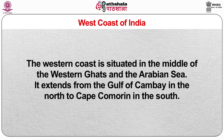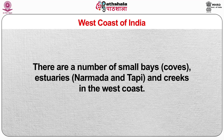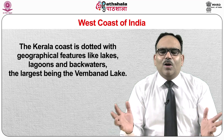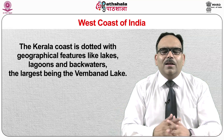The western coast is situated in the middle of the Western Ghats and the Arabian Sea. It extends from the Gulf of Khambhat in the north to Cape Comorin in the south. The coasts are rich in alluvium brought by streams that originate in the Western Ghats. There are a number of small bays, estuaries and creeks on the west coast. The Kerala coast is dotted with geographical features like lakes, lagoons and backwaters, the largest being the Vembanad lake. The Maharashtra and Goa coast are known as the Konkan coast, and the Karnataka and Kerala coast are known as the Malabar coast.